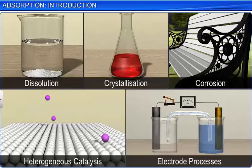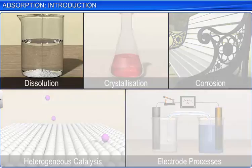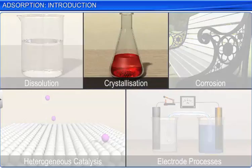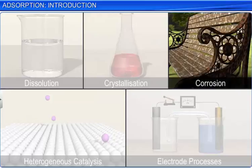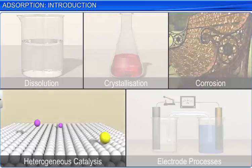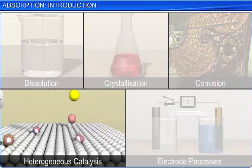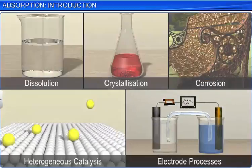Surface chemistry is an important branch of chemistry as a number of phenomena like dissolution, crystallization, corrosion, heterogeneous catalysis, and electrode processes occur at an interface.